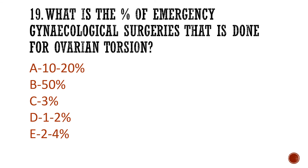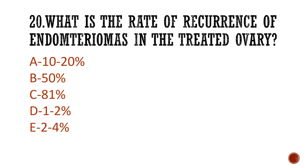Question 19: What is the percentage of emergency gynaecological surgeries done for ovarian torsion? Options include 10–20%, 50%, 30%, 1–2%, 2–4%, or 81%. The answer is 81%.